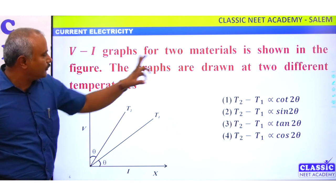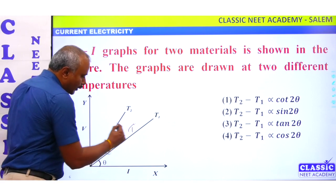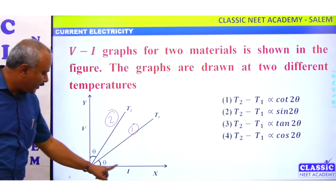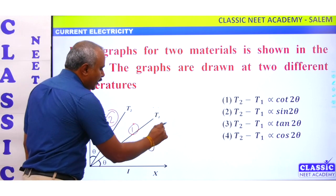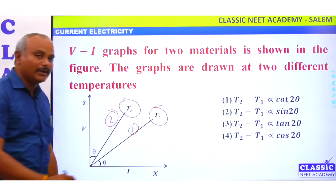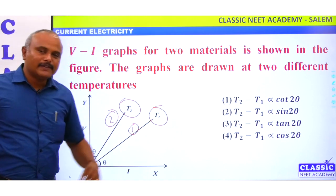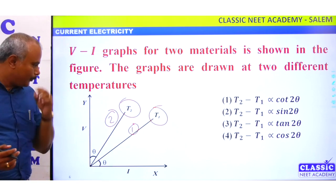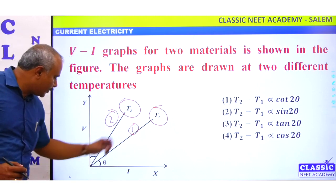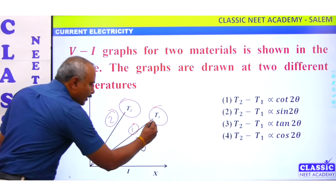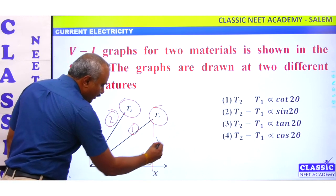For two metals, as shown in the figure. This is metal one and this is metal two. This is a V-I graph at different temperatures. First metal is at temperature T1 and second metal is at temperature T2.